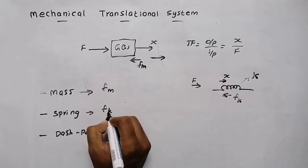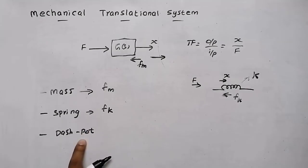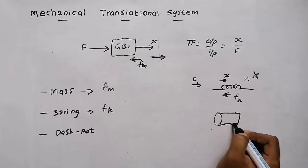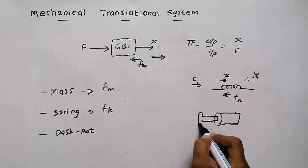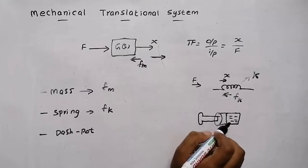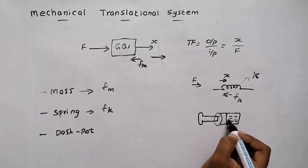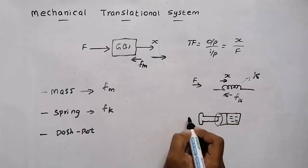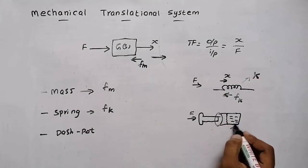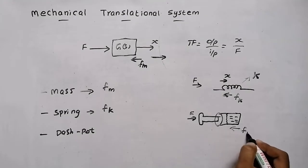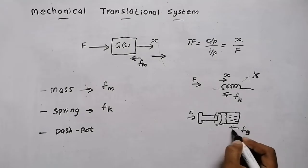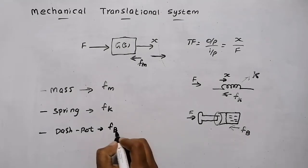Now dashpot — dashpot is something similar to a syringe injection. There is a cylinder with a piston and viscous fluid inside. When we push the piston, there is an opposing force due to the fluid. The piston will not move directly; there will be a small opposing force offered by the liquid inside the cylinder. That is denoted by fb, where b is the damping coefficient.